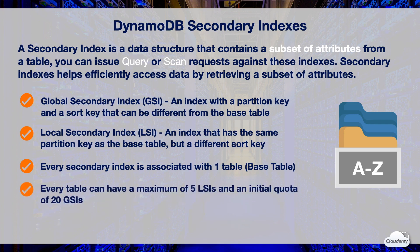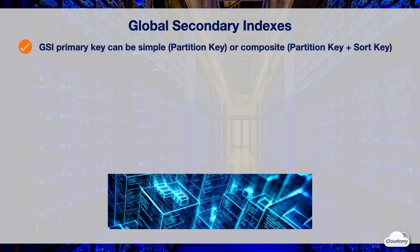Every DynamoDB table can have a maximum of 5 LSIs and an initial quota of 20 GSIs. You can request a quota increase for GSIs using AWS Support. The primary key of a GSI can be either a simple or composite primary key. A simple primary key is made of one attribute known as the partition key. A composite primary key is composed of two attributes: a partition key and a sort key.